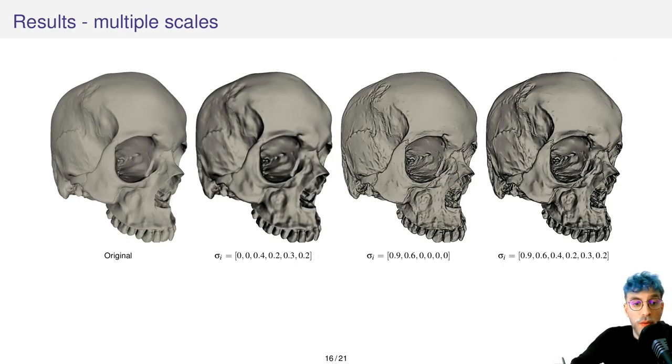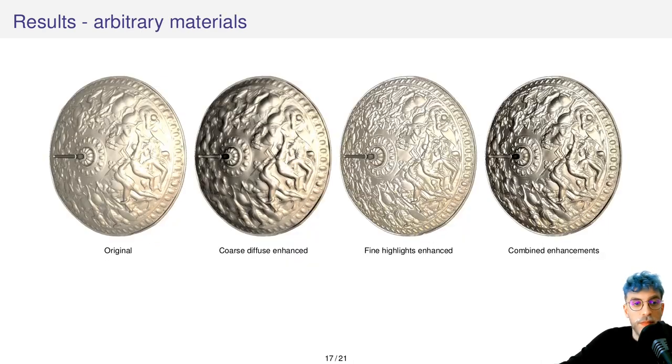Now let's sum up what we've seen until now. We can enhance objects at multiple scales. Here you can see how we enhance the coarse scales of the model. Here it's fine scales, and here all scales at the same time using a combination of sigma values. This multi-scale enhancement is enabled for arbitrary materials using our technique.